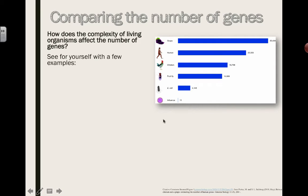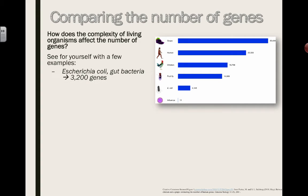Depending on the sources you look at, these numbers are going to vary and change. But most of the time they're relatively similar — you might see a few discrepancies. E. coli is a type of bacteria found in our gut; out of their entire genome, they have around 3,200 genes.